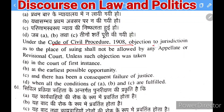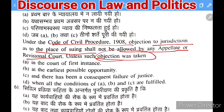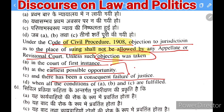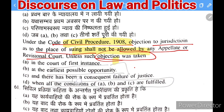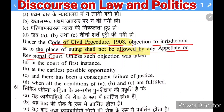Next question under CPC: objection to jurisdiction as to place of suing shall not be allowed by an appellate or revisional court unless the objection was — (A) taken in the court of first instance, (B) at the earliest possible opportunity, (C) there has been a consequent failure of justice. The right answer is when all three conditions combine — the objection must have been raised in the court of first instance at the earliest opportunity and there must have been a consequent failure of justice.